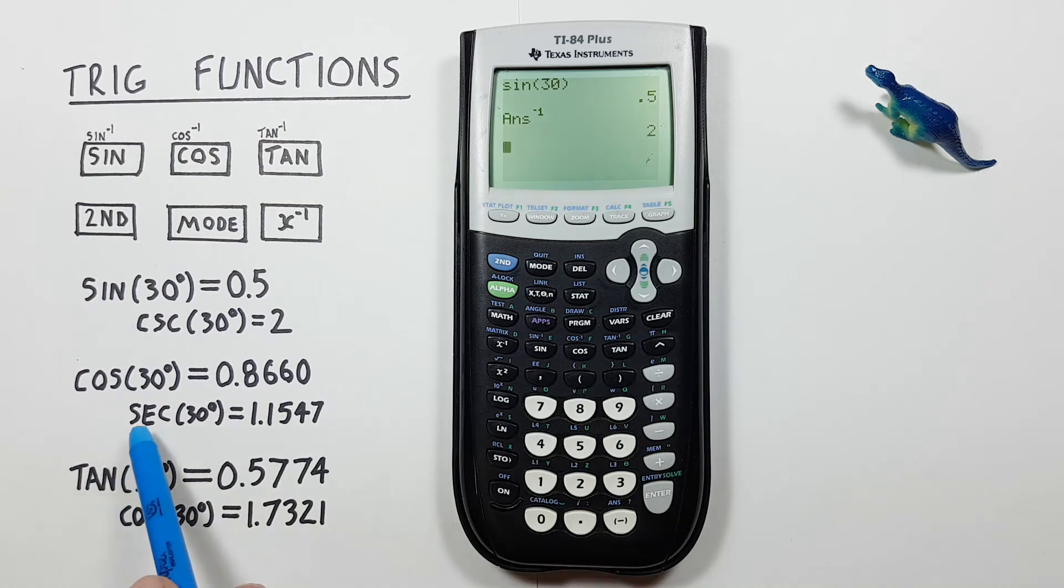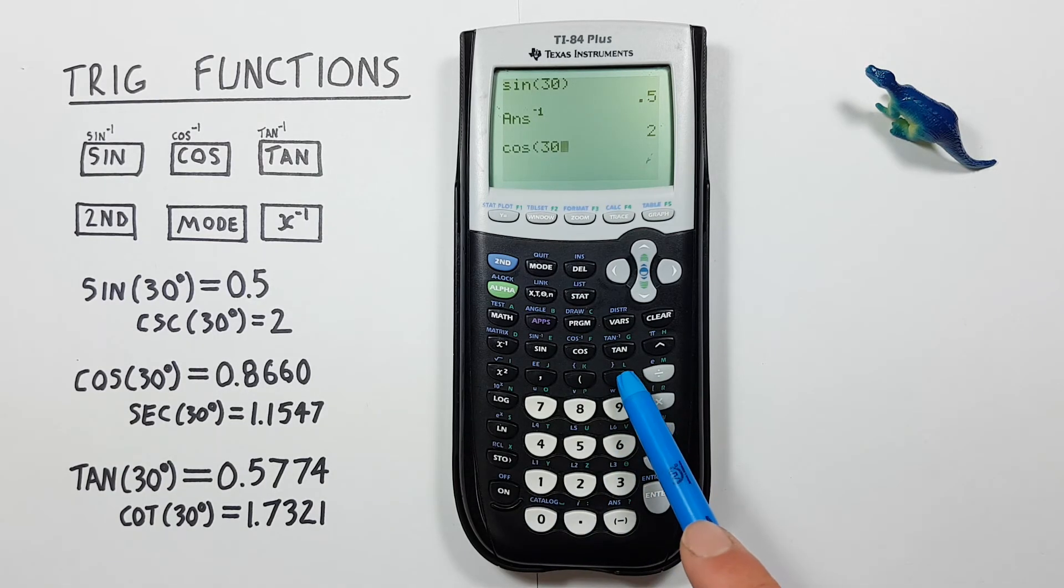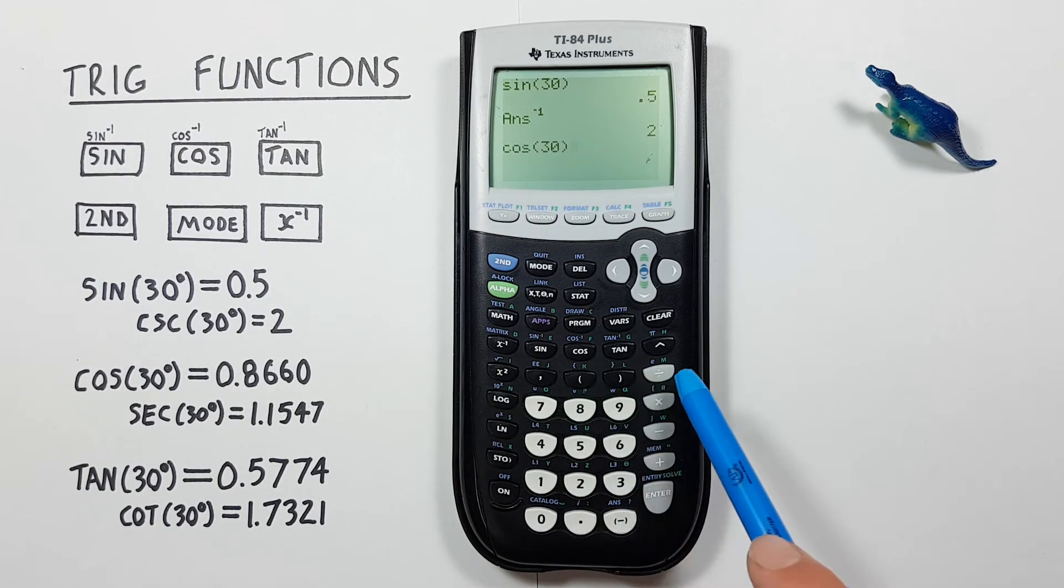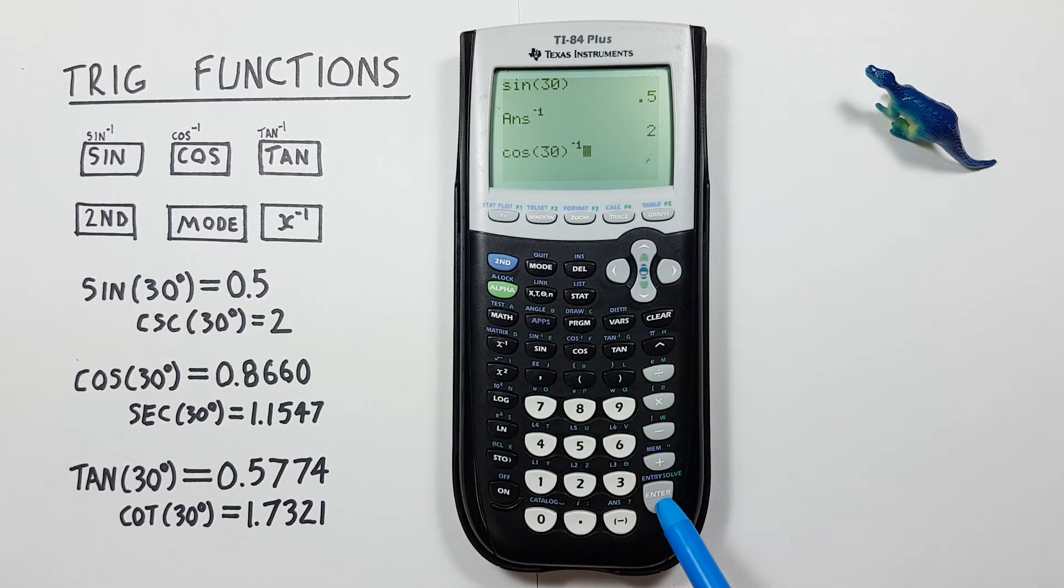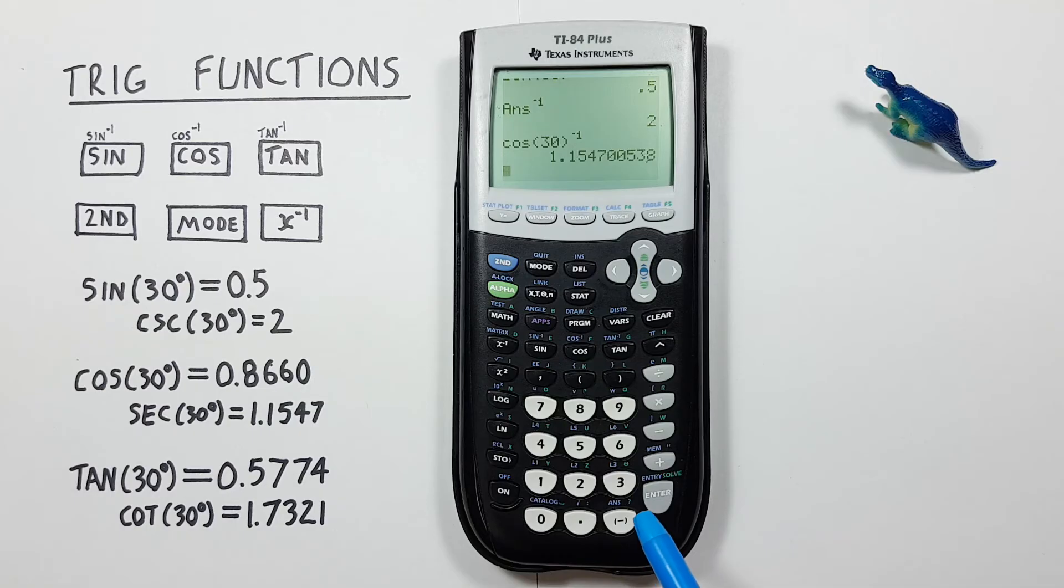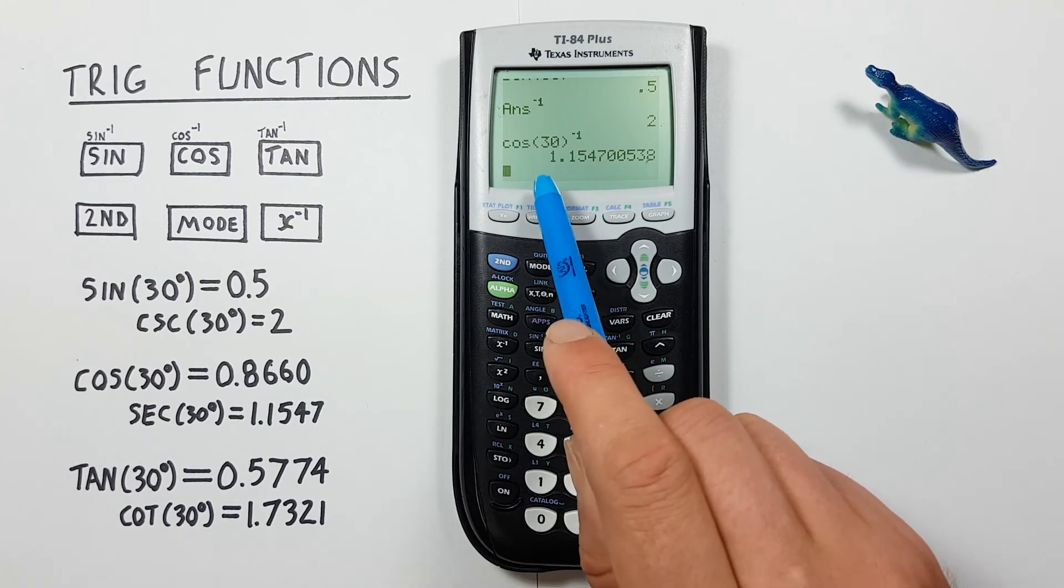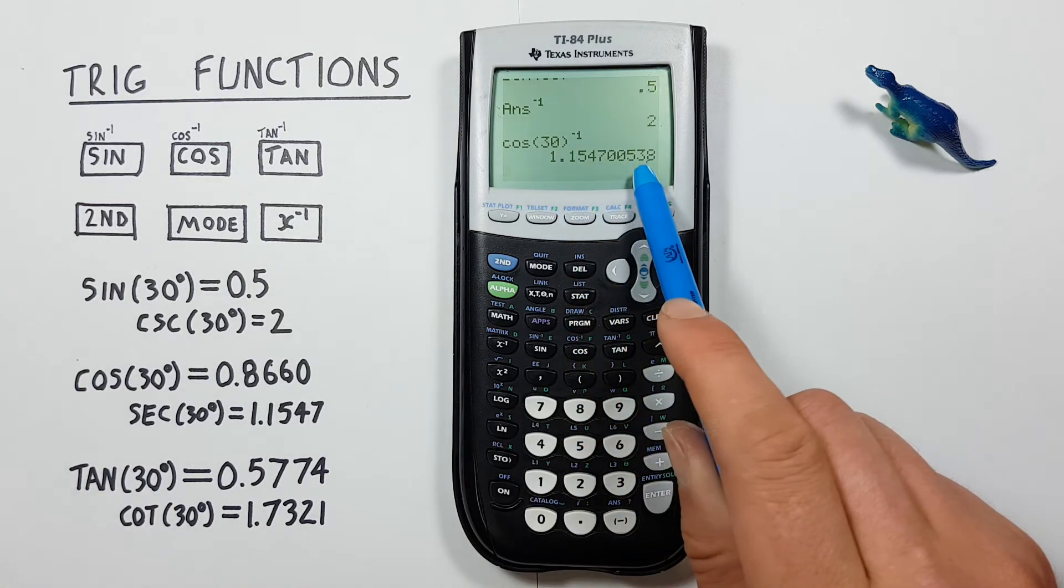For secant, we use cos. So we go cos of 30, close our bracket. And we don't have to press enter here. We can just go straight to the inverse and press enter. And see this gives us a result of the secant of 30 is equal to 1.1547, etc.